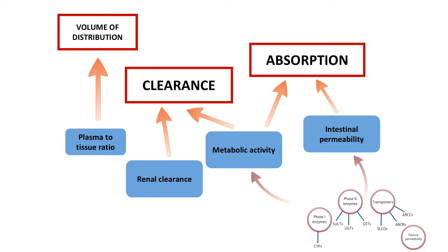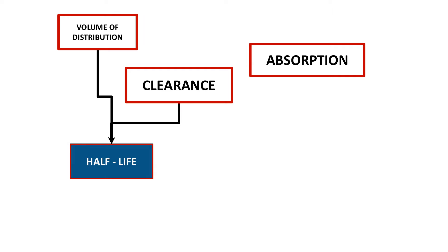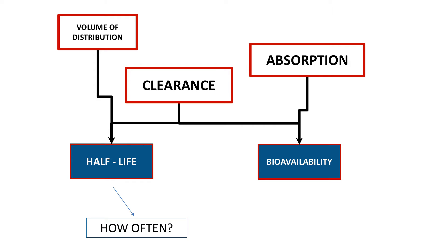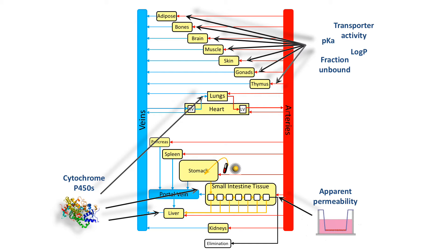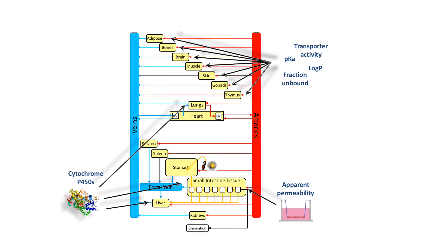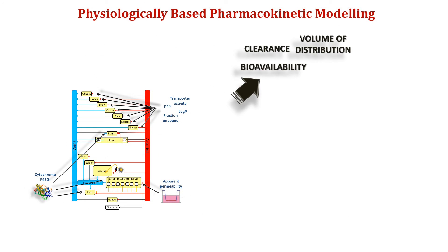We can put clearance and volume of distribution together to predict half-life, as well as absorption and clearance to predict bioavailability. This is the core of physiologically based pharmacokinetic modeling: a mechanistic description of drug distribution based on differential equations that describe movement of drugs between tissues, as well as the processes that can mediate oral absorption and metabolism. We can take the core of the models and then predict bioavailability, volume of distribution, and clearance.